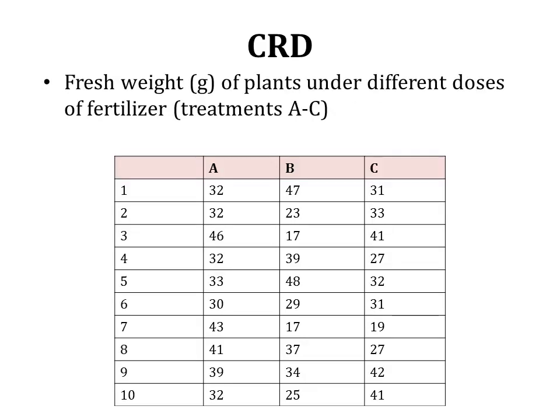We arrange the data in columns according to treatments — columns A, B, and C. Because the response variable is a measurement variable, we can compare mean values using one-way ANOVA. We use one-way ANOVA because there is only one independent variable and one measurement variable. We do not apply three separate tests just because there are three treatment categories — instead, one-way ANOVA handles all three treatments simultaneously.